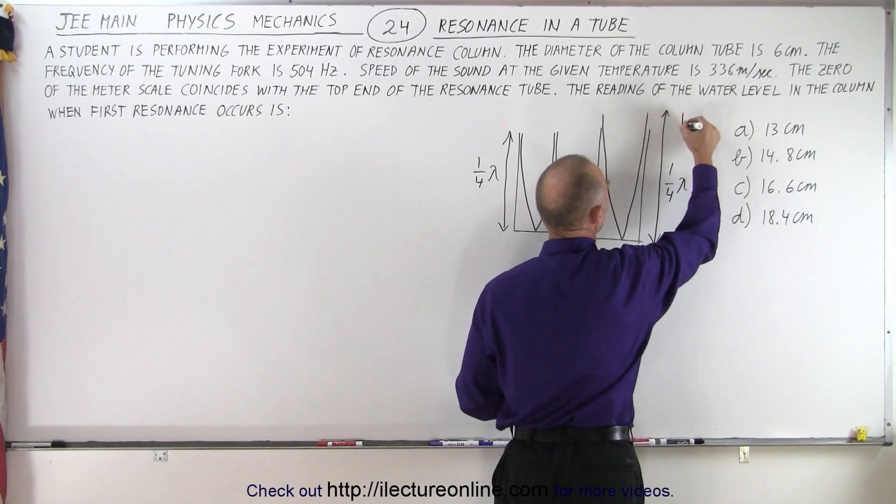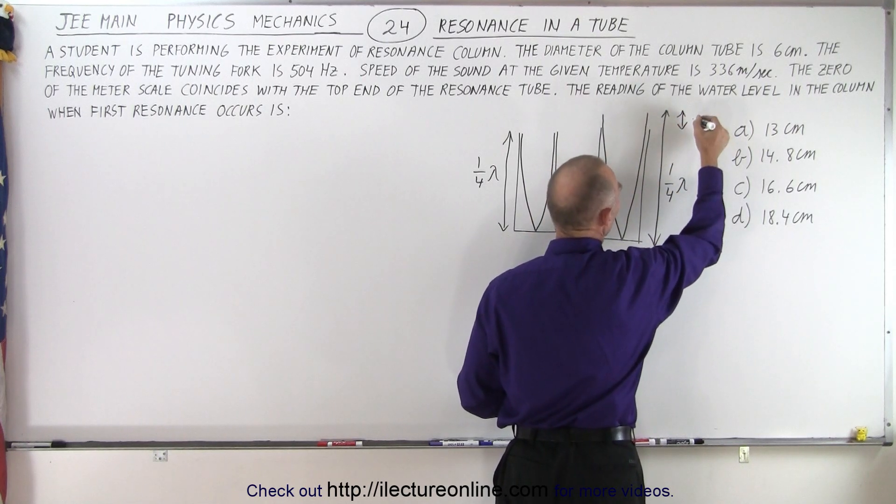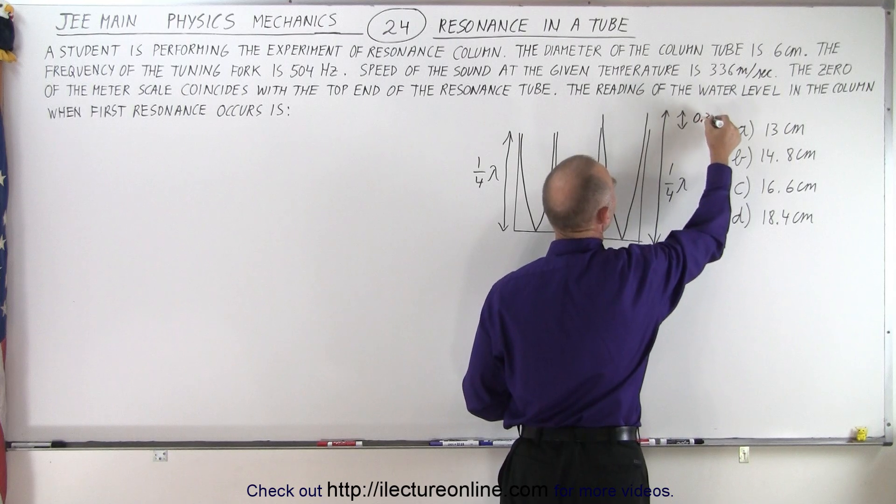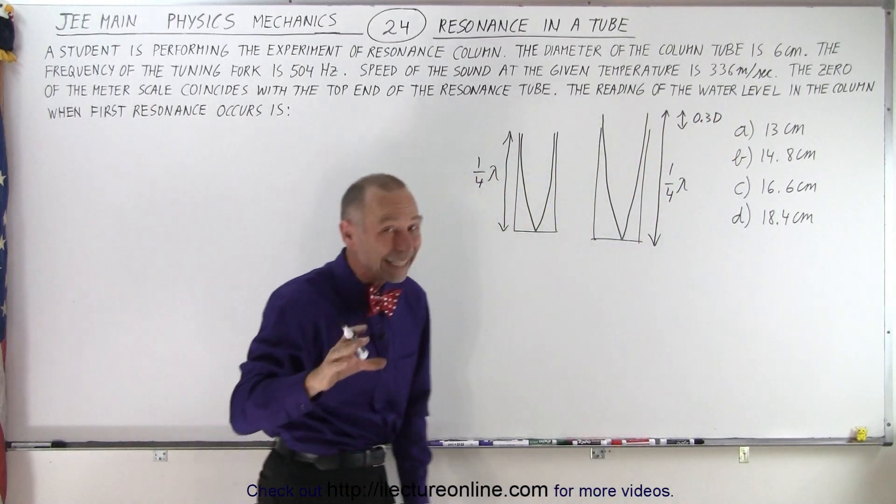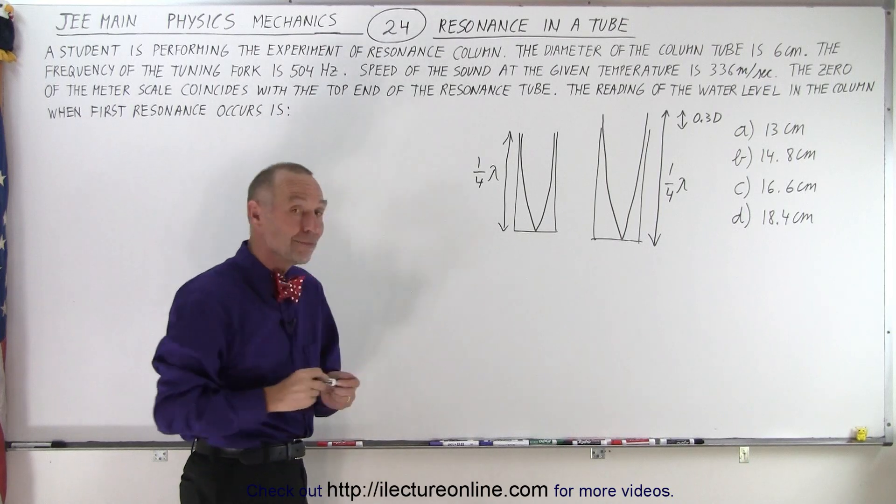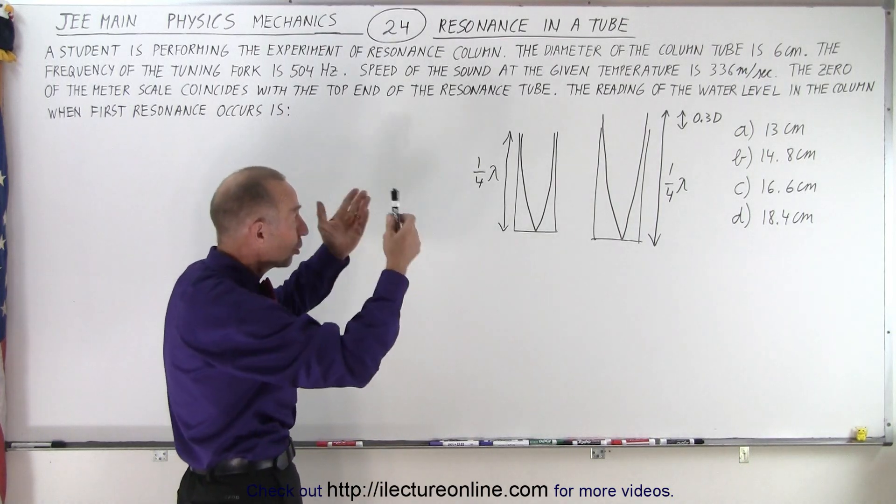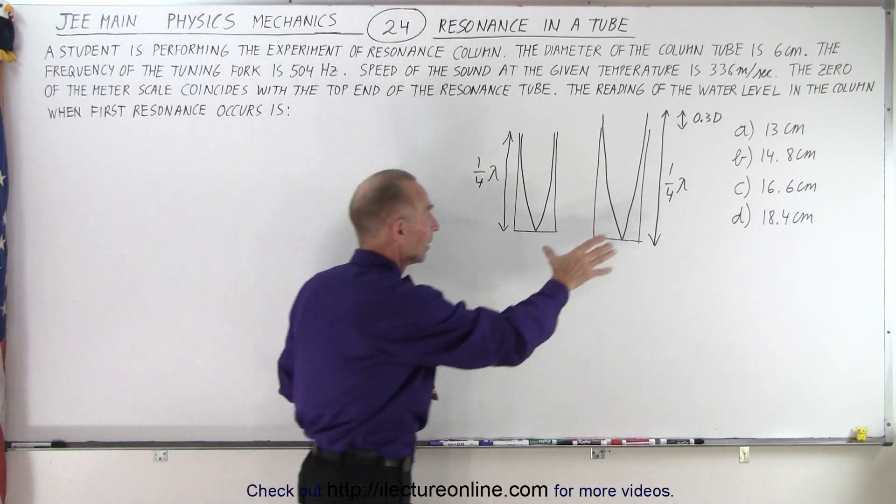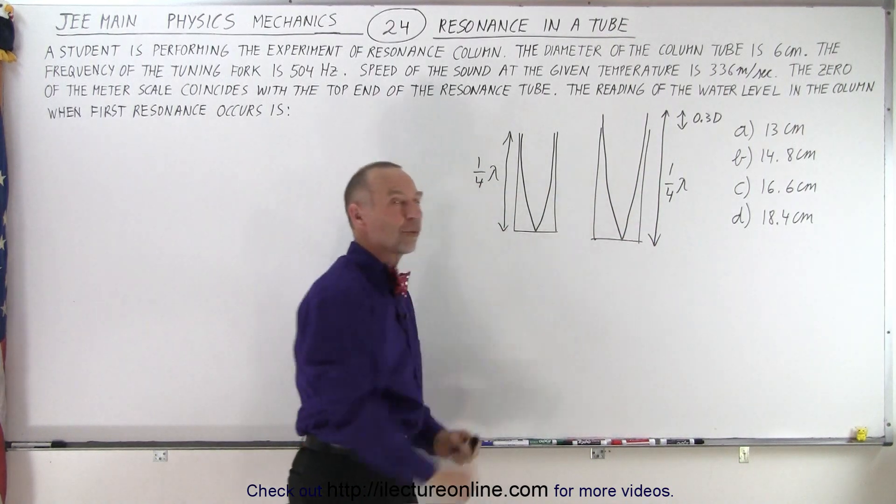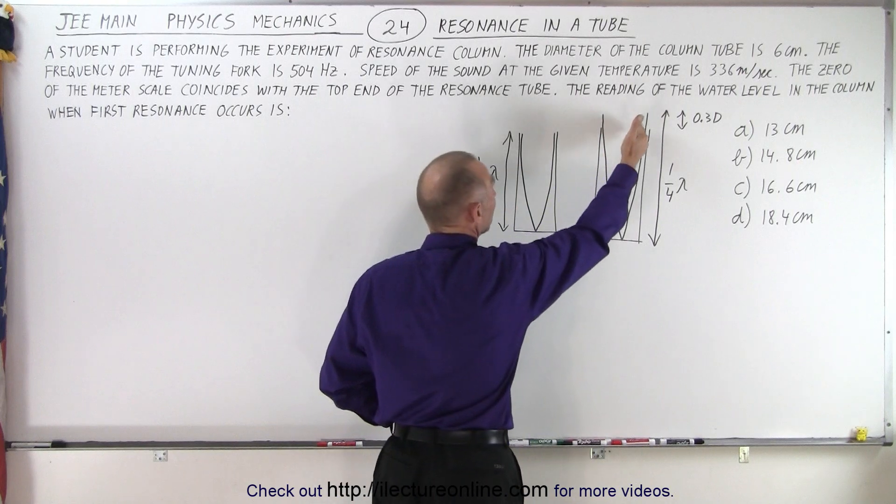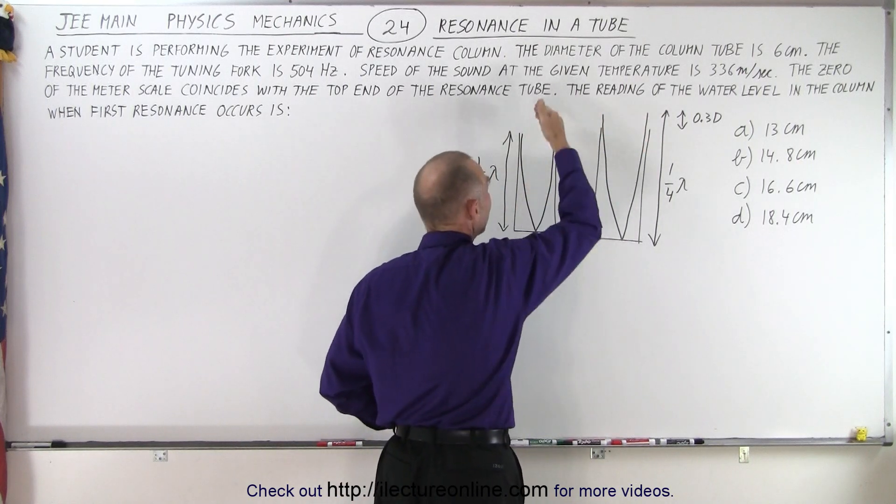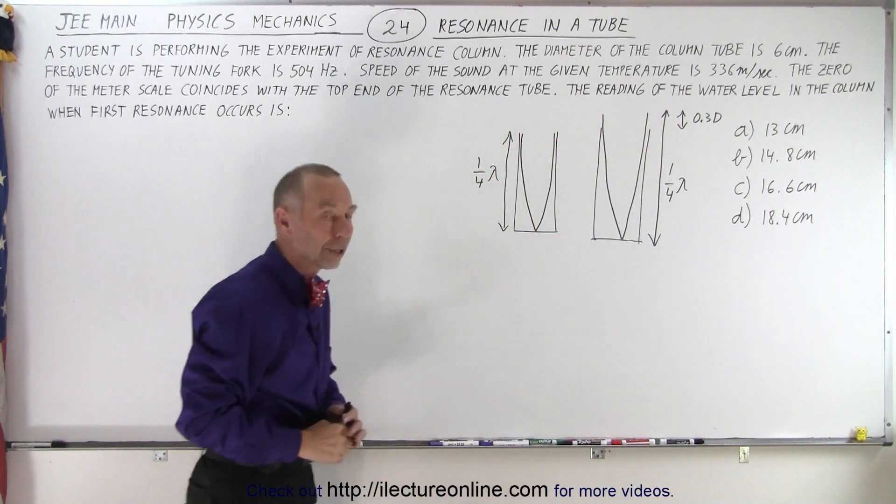And that extra portion right here is approximately equal to 0.3 times the diameter of the tube. Now they did give us a diameter, and so maybe that implies that we should look at the situation like this instead of the situation like that. But most textbooks tend to ignore that. I mean, they may mention it.